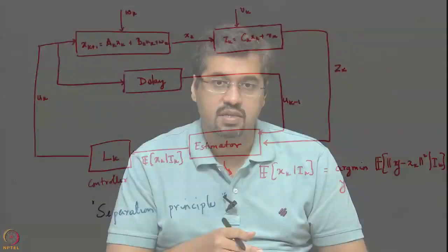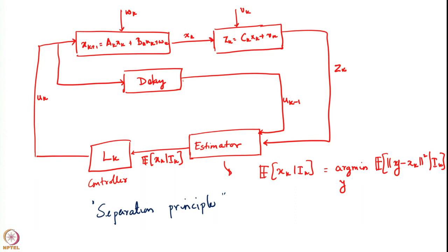So far we have only assumed that the noise is independent and zero mean; we have not assumed any specific probability distribution for the noise. We will use the probability distribution of the noise when we try to derive expressions for the conditional expectation of the state given the information. There is also a certainty equivalence angle here: the optimal controller applies the same control as it would if the system were deterministic, with the state replaced by its conditional mean. In the following lectures, we will start relaxing some of these assumptions, going in depth into how the conditional expectation of the state given the information can be computed.